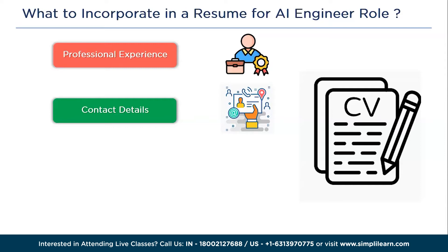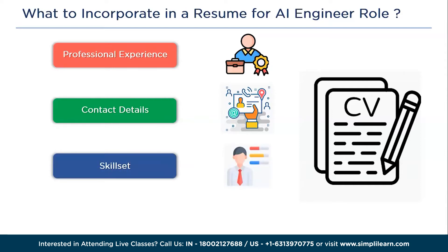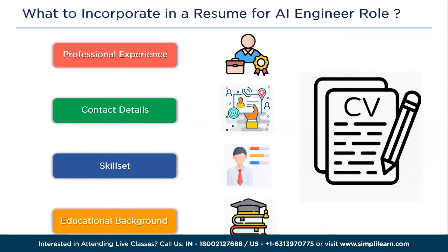Third is skill set — here you list the things you are good at. For an AI engineer, this could be programming languages like Python, machine learning, deep learning, data analysis, or any other technical skills. After that, educational background — this is where you talk about your schooling and degrees. You can also include awards and certifications, personal projects, and languages.